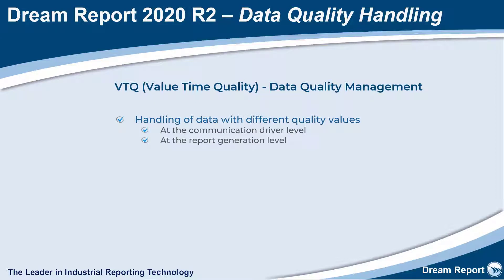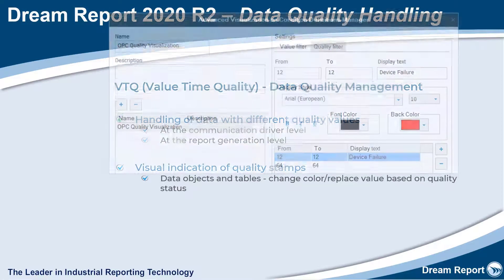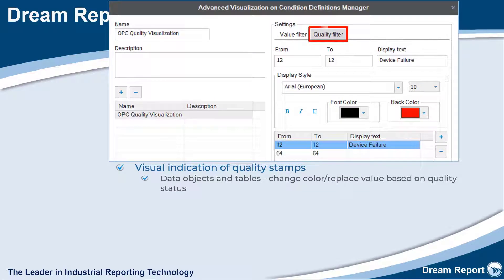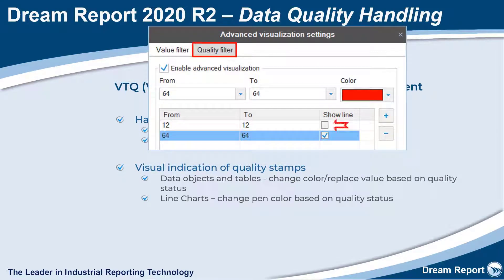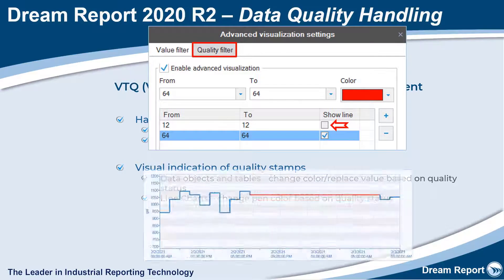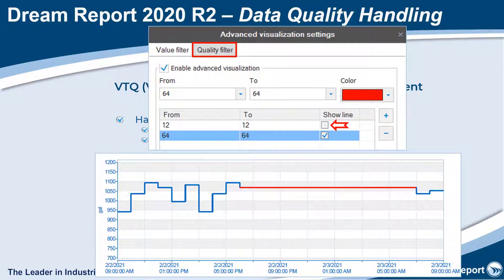In single data objects and tables, we've added the option in the advanced visualization to change color or replace a value based on the quality status. And in line charts, we've also added the option to change the line color, or even hide that section of a line based on the quality status. This gives you confidence that you're only focused on good quality data.